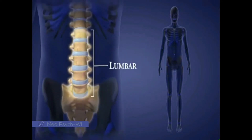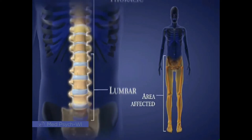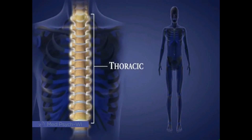The five lumbar vertebrae in the lower back are called L1 to L5. Injuries at these levels can affect leg and foot function. There are 12 thoracic vertebrae in the chest, called T1 to T12.